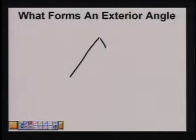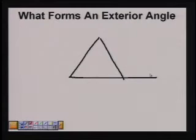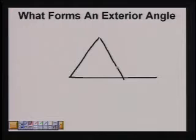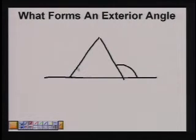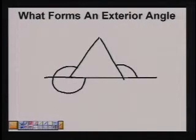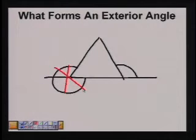When forming an exterior angle from the extension of one side, make sure that you do not cross any lines. An exterior angle goes from one side to the extended side. It does not cross any line. So this is not an exterior angle.